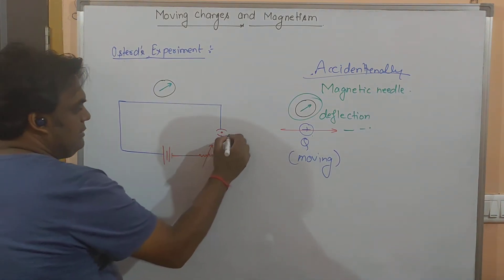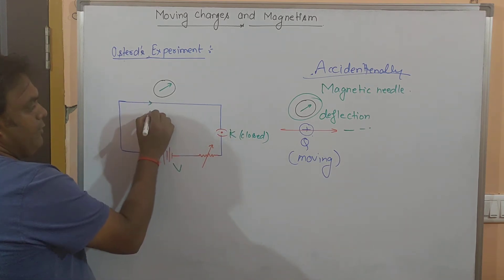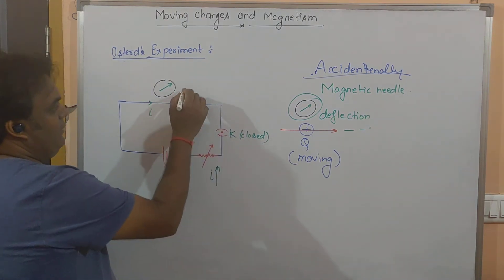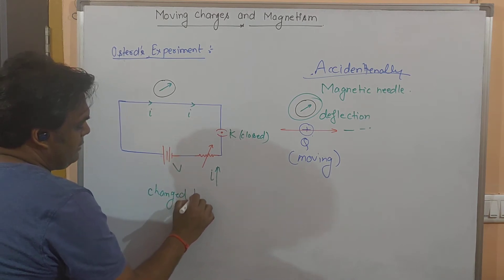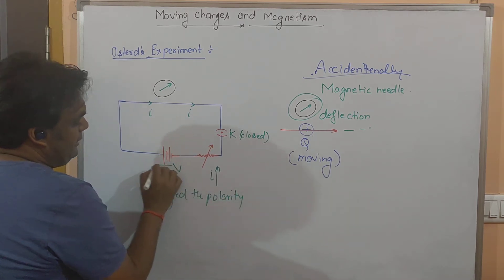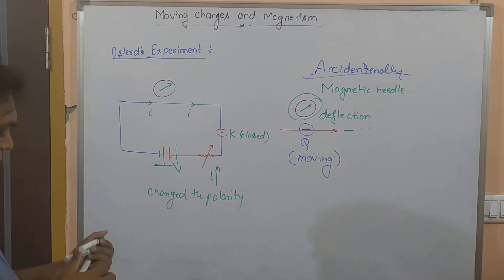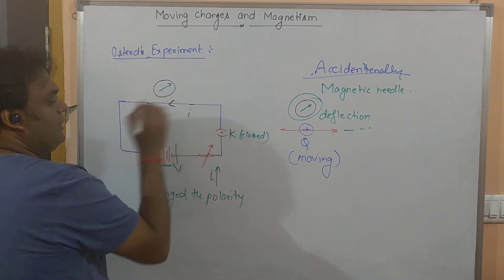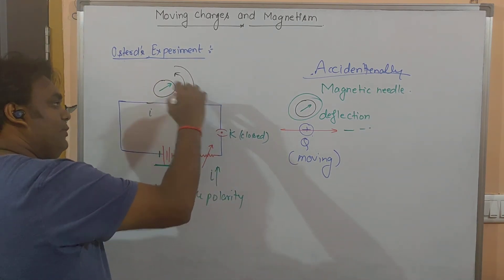What he observed: as soon as the key is closed, the current starts flowing. There is a deflection in the galvanometer. He increased the current and observed that the deflection also increased. Then he changed the polarity of the battery — introducing a negative terminal where there was a positive, and vice versa. Due to this polarity change, the direction of the current also changed, and accordingly the direction of deflection also changed.